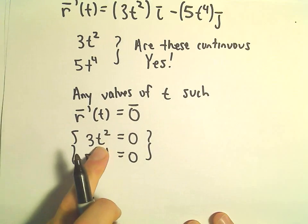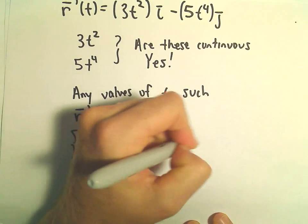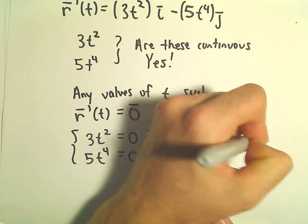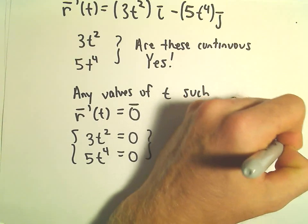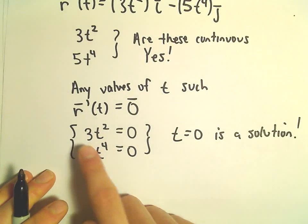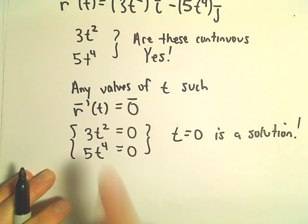Well notice, if you plug in t equals 0, t equals 0 is a solution to this system. Right, if you plug in 0 and plug in 0, we'll get 0 out.